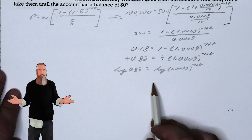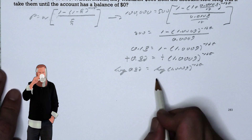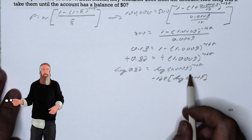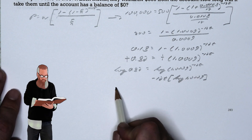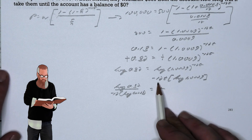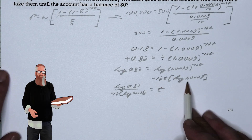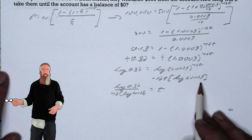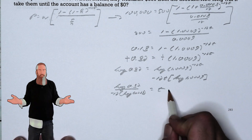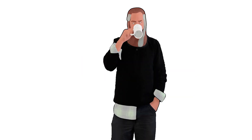We can then take the log of both sides, apply the power property to the right side, and divide both sides by negative 12 times log 1.0009 to give us t all by itself, which is approximately 18.4.